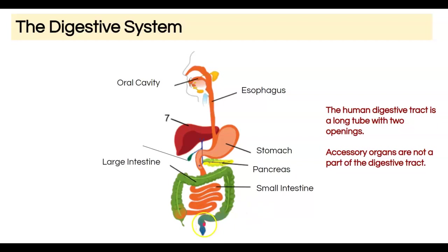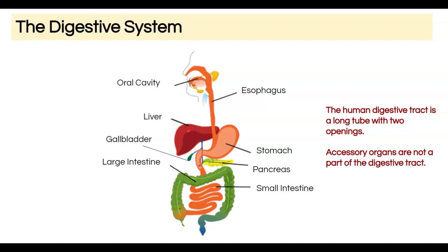We also have the rectum and anus. As food moves from the stomach to the small intestine, materials are input through ducts from the gallbladder. The gallbladder, pancreas, and liver are all what we call accessory organs — they are not part of the digestive tract itself, but they are critical to proper digestion.